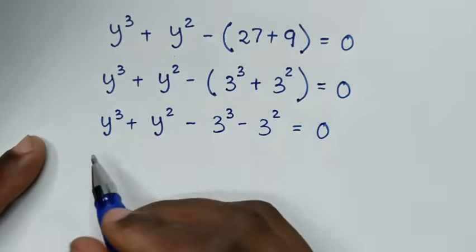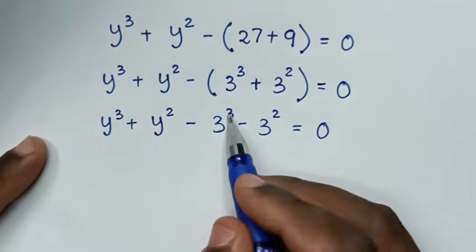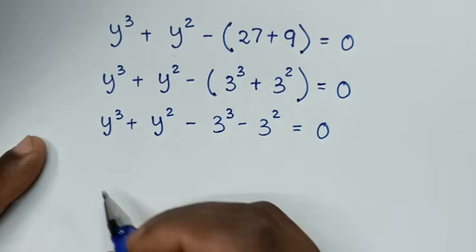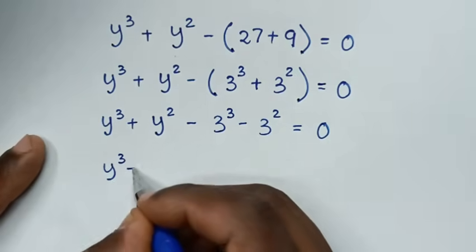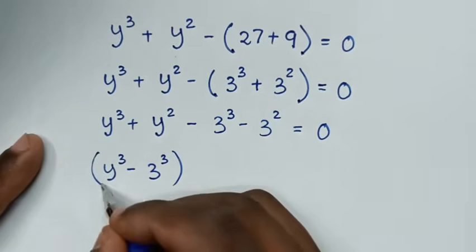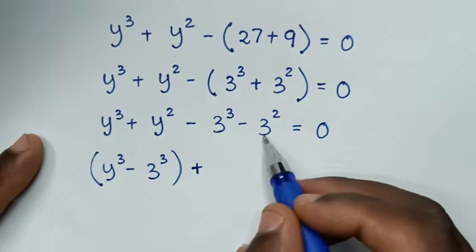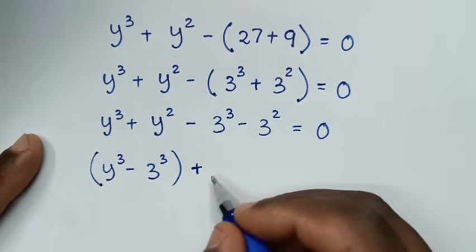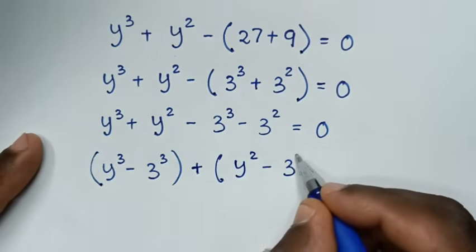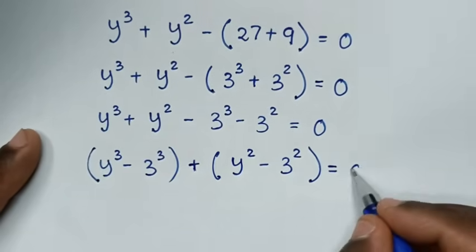From here, we group the terms with power 3 together and power 2 together. So it becomes (y³ minus 3³) plus (y² minus 3²) equals 0.